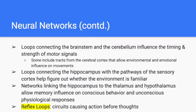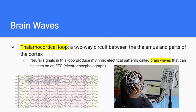Reflex loops are circuits that cause action before thoughts. Actions in reflex loops are controlled by the spinal cord or subcortical regions of the brain and they never reach the cortex where thoughts occur. Back to the watching TV example: signals are sent back to the thalamus from the cortex to integrate this information with other sensory information. This two-way circuit between the thalamus and parts of the cortex is called the thalamocortical loop.